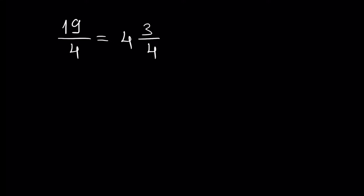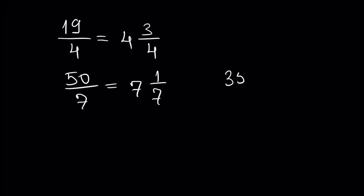Another example is 50 over 7. Since we have 7 inside 50 seven times, it will be 49. We write 7, and 1 is the remainder, and 7 is unchanged.